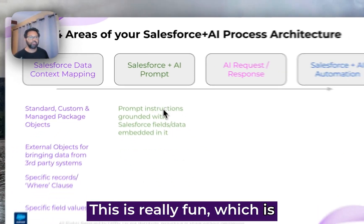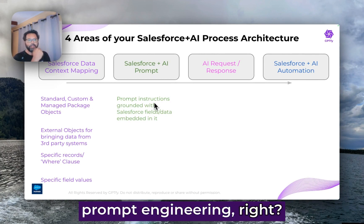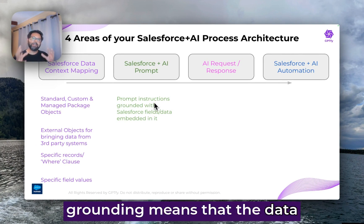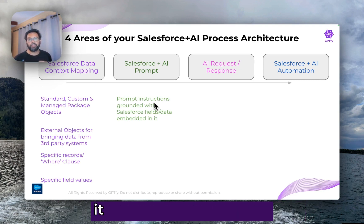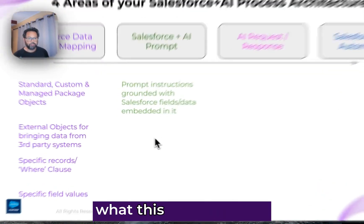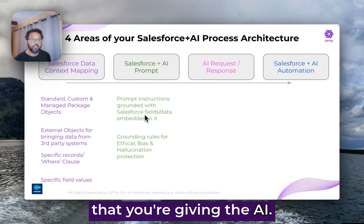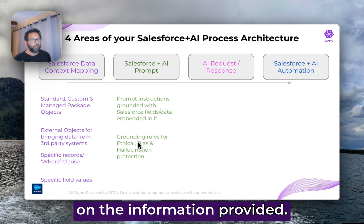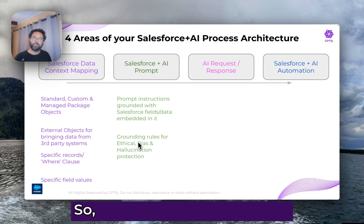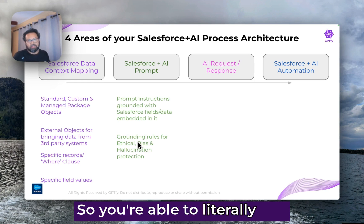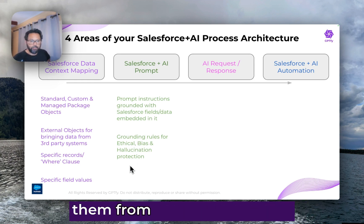The second portion is really fun — this is where you actually start doing prompt engineering. The idea is you can give prompt instructions and then ground them with Salesforce field data. Grounding means the data is embedded inside the prompt — for example, 'generate me an email and address it to the person's first name.' You can embed that kind of grounding, and I'll show you that inside Salesforce. In addition, you can add what are known as grounding rules, telling AI to only respond based on the information provided, not to make assumptions, not to come up with its own version of truth — eliminating bias, hallucination, and any lack of ethics. You can embed all of that, and I'll show how products let you just apply them when writing prompts.